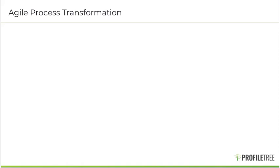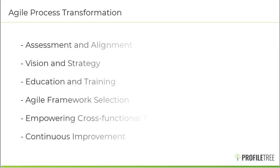Now that we know what agile means for a business, let's take a look at the process of agile transformation, which typically involves the following steps. The first step is assessment and alignment. You want to begin by assessing the organization's current state, including its culture, processes and structures. By identifying areas that need improvement and determining the motivating factors for adopting agile principles, you will be able to align key stakeholders and leadership on the need for change.